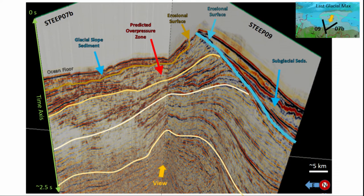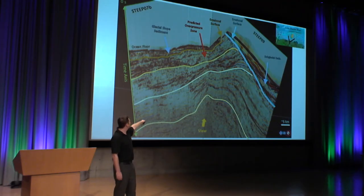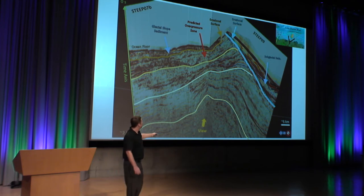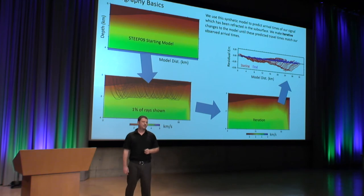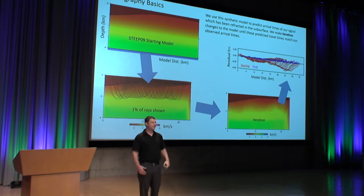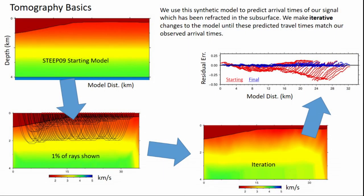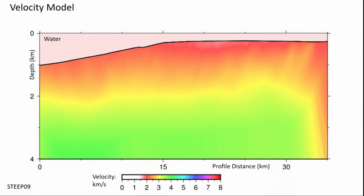How does it work? You get a starting model of what you think it might look like, and then you take your seismic observations and adjust the velocities in your starting model until you have a lower residual error between your observations and your synthetic. For Steep 9 — one of the lines we're talking about — from this I could identify three possible zones of lower velocities.